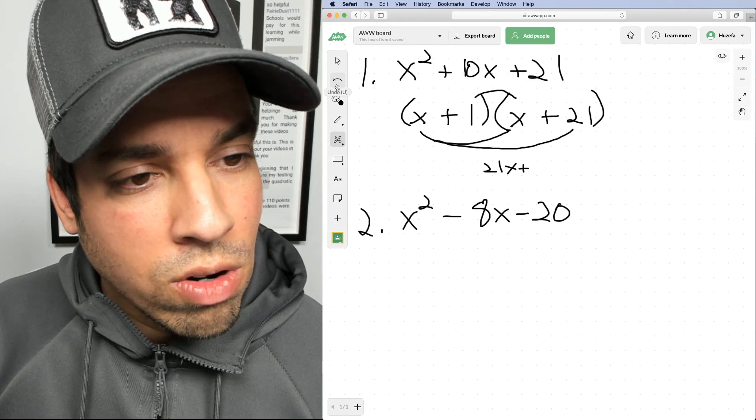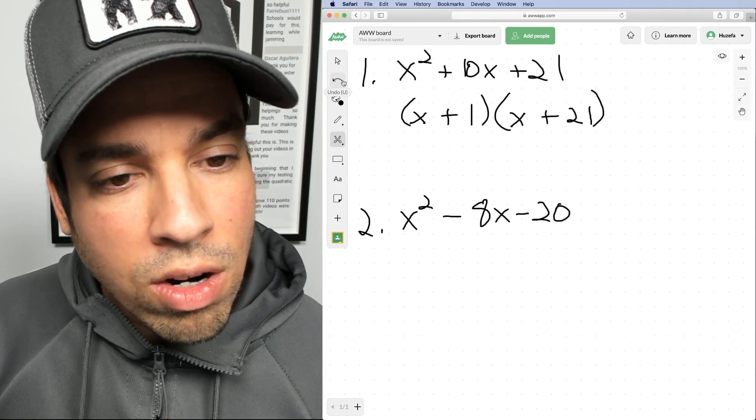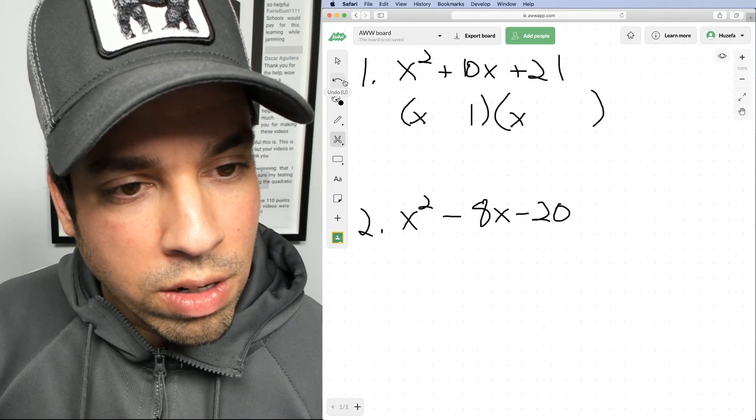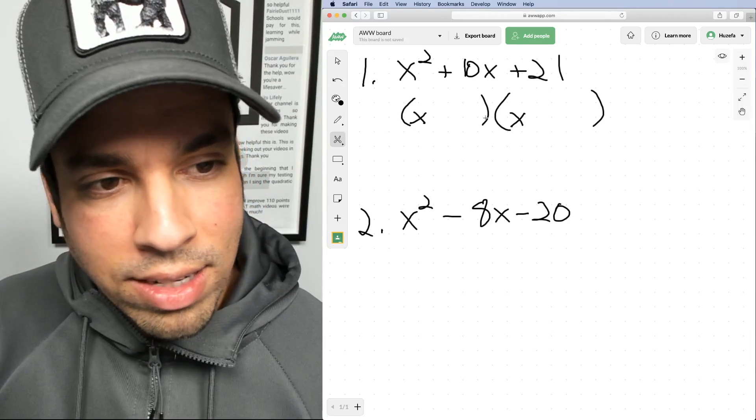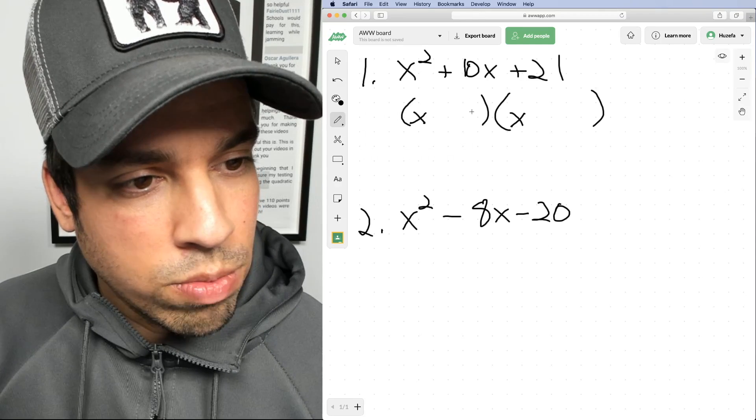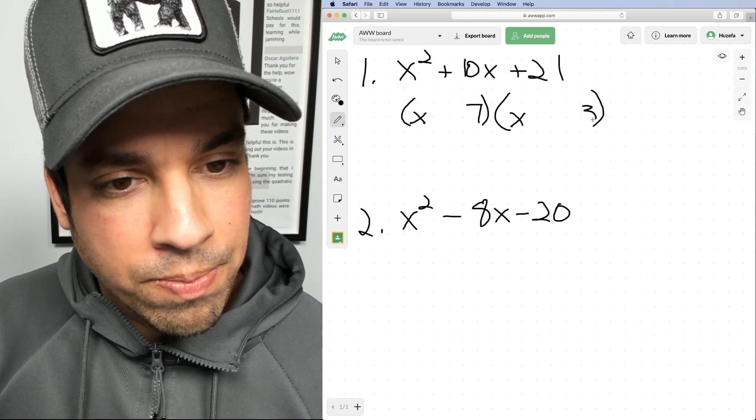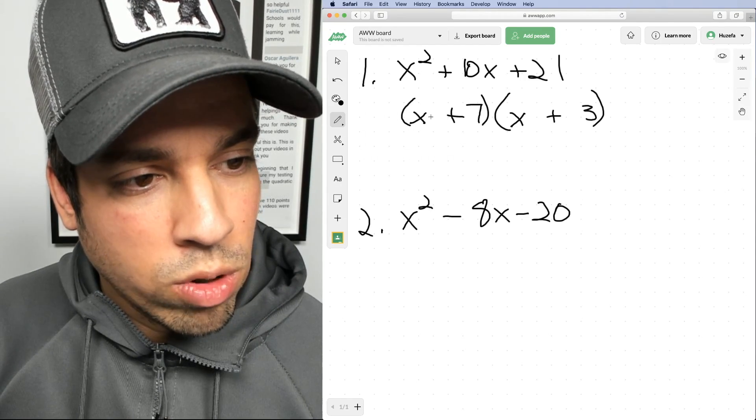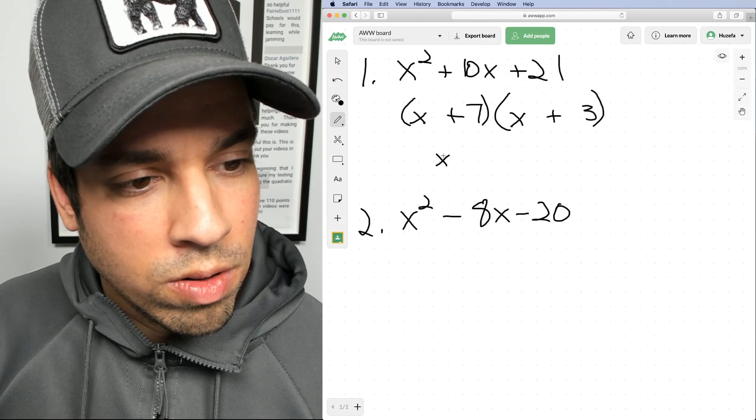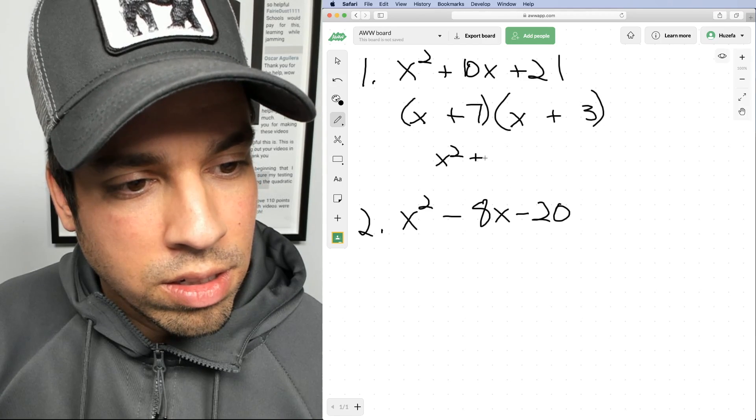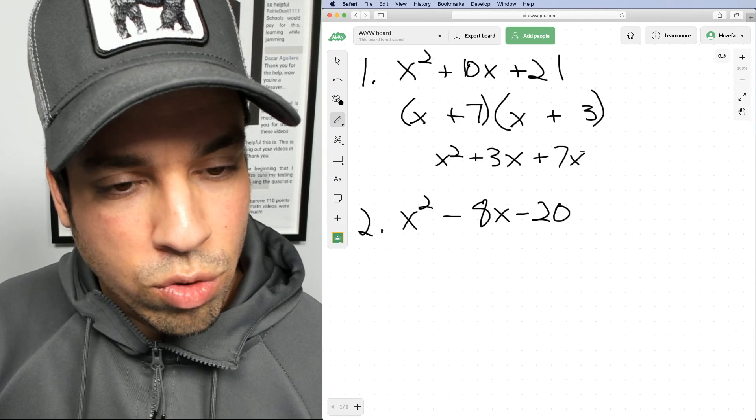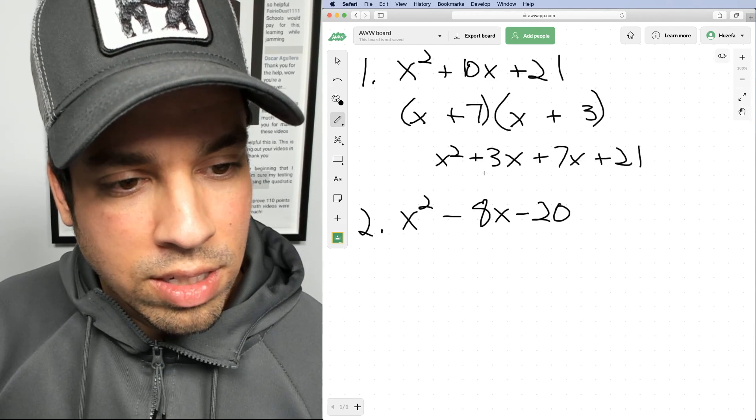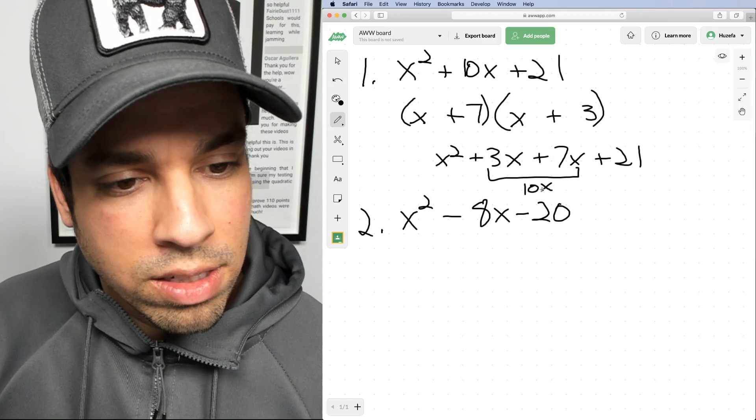We now have to think about two numbers that not only multiply to 21 but also add to 10. So it's going to multiply to 21, add to 10. What two numbers fit that bill? It's going to be 7 and 3. Now we can see that if we FOIL that, we get x squared plus 3x plus 7x plus 21, and this gives us that combined 10x. We're good to go.